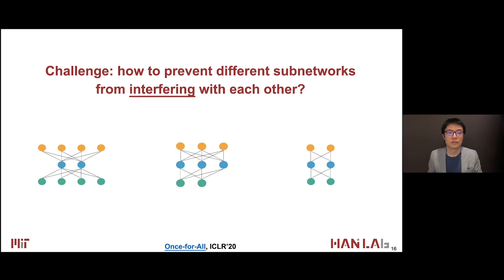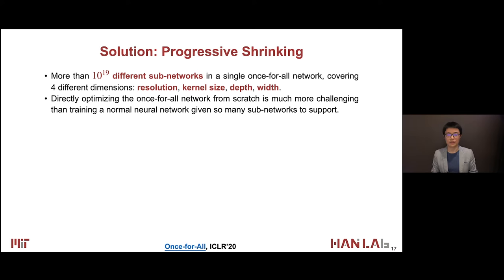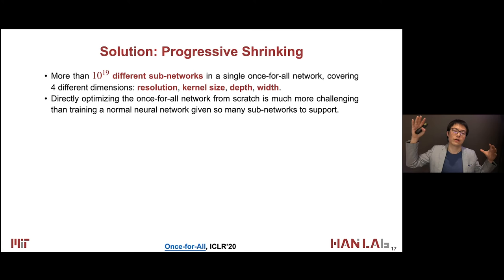But this is not free lunch. The challenge is how to prevent different subnetworks — the large model, the middle-size model, and the small model — from interfering with each other. The solution is that we proposed a progressive shrinking algorithm to support both the large model and also the small model.